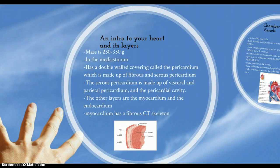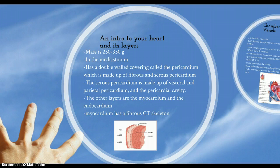There are two other layers in your heart wall: the myocardium and the endocardium. Your myocardium is basically the muscular portion and makes up the bulk of your heart wall. Your endocardium is basically endothelium, and it extends out into the endothelium of your blood vessels as well. The myocardium also has a connective tissue skeleton called the fibrous skeleton of your heart.